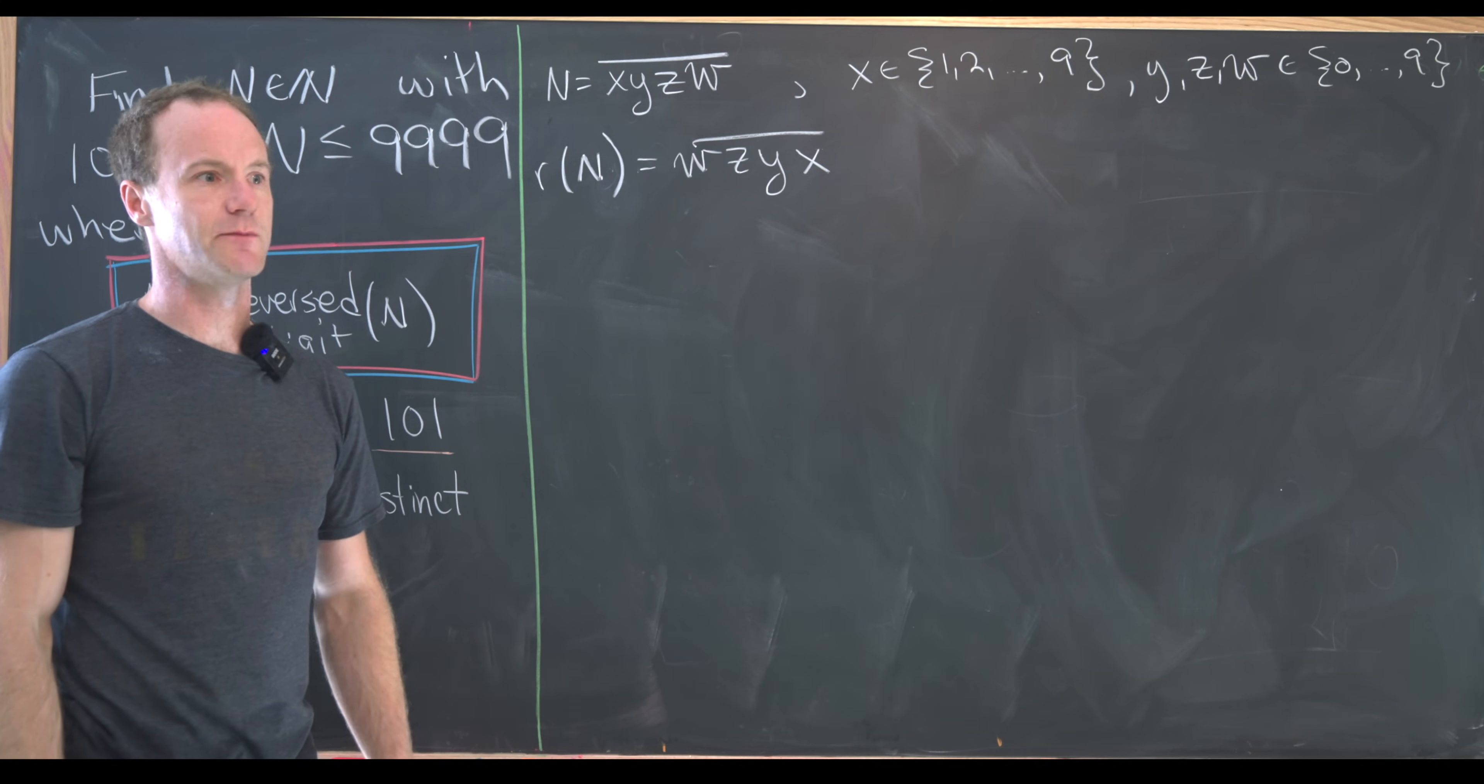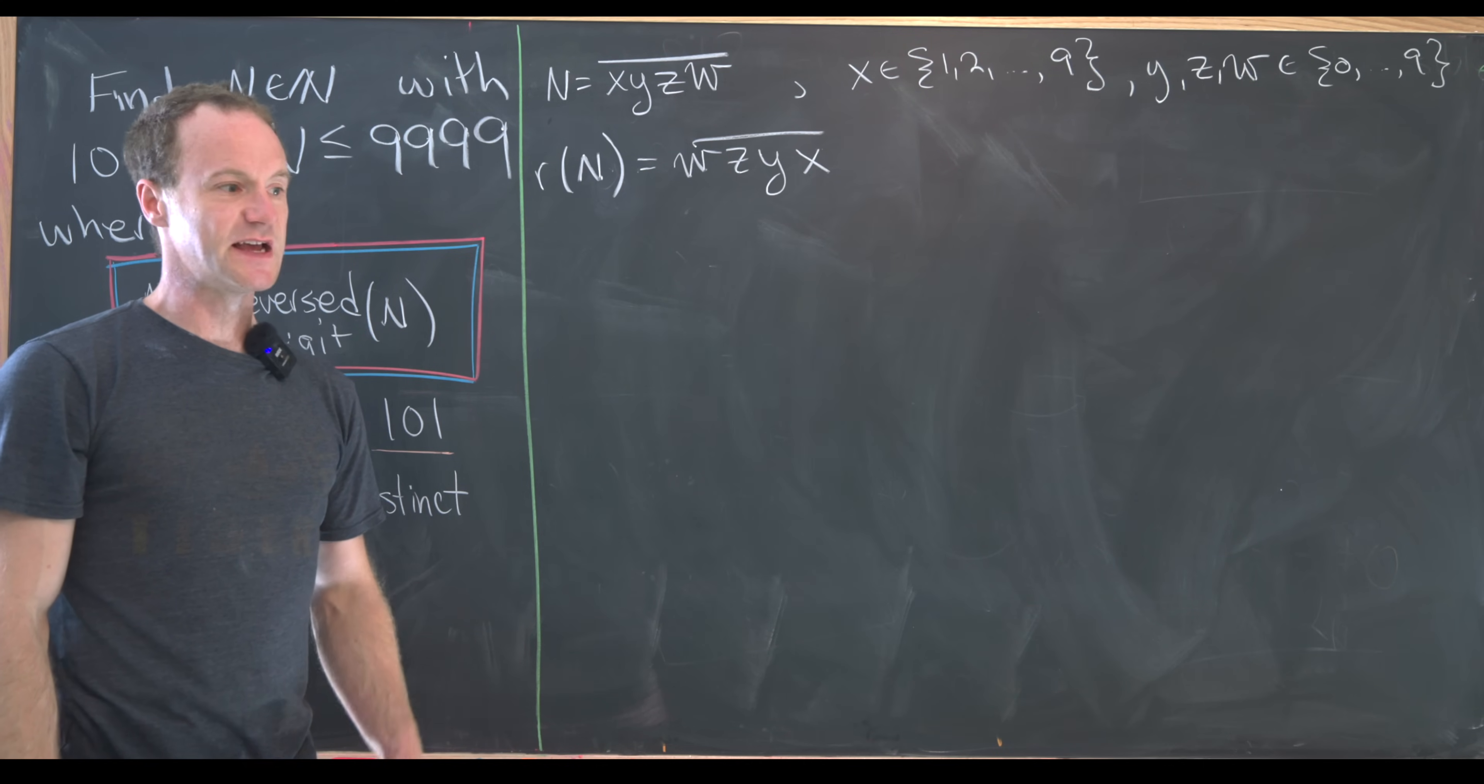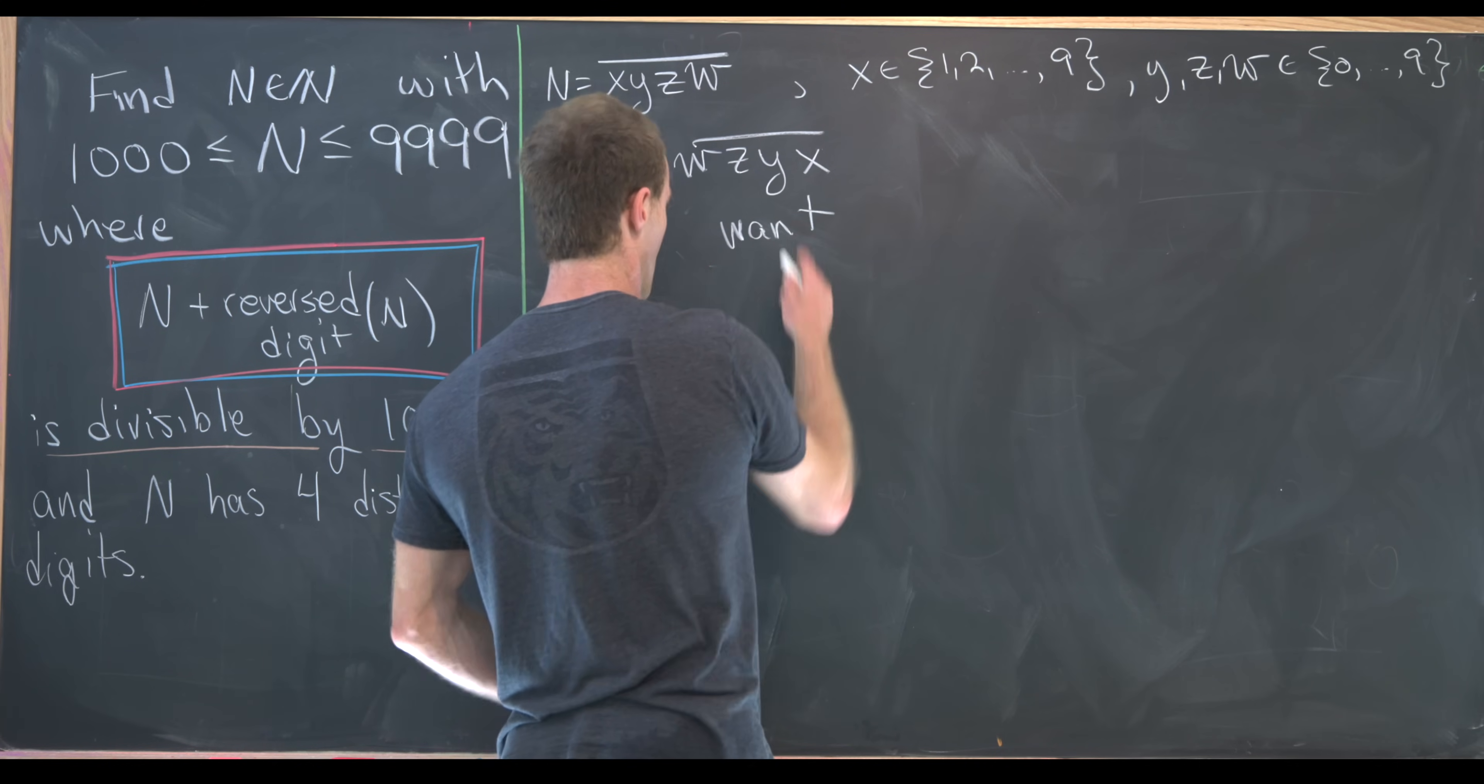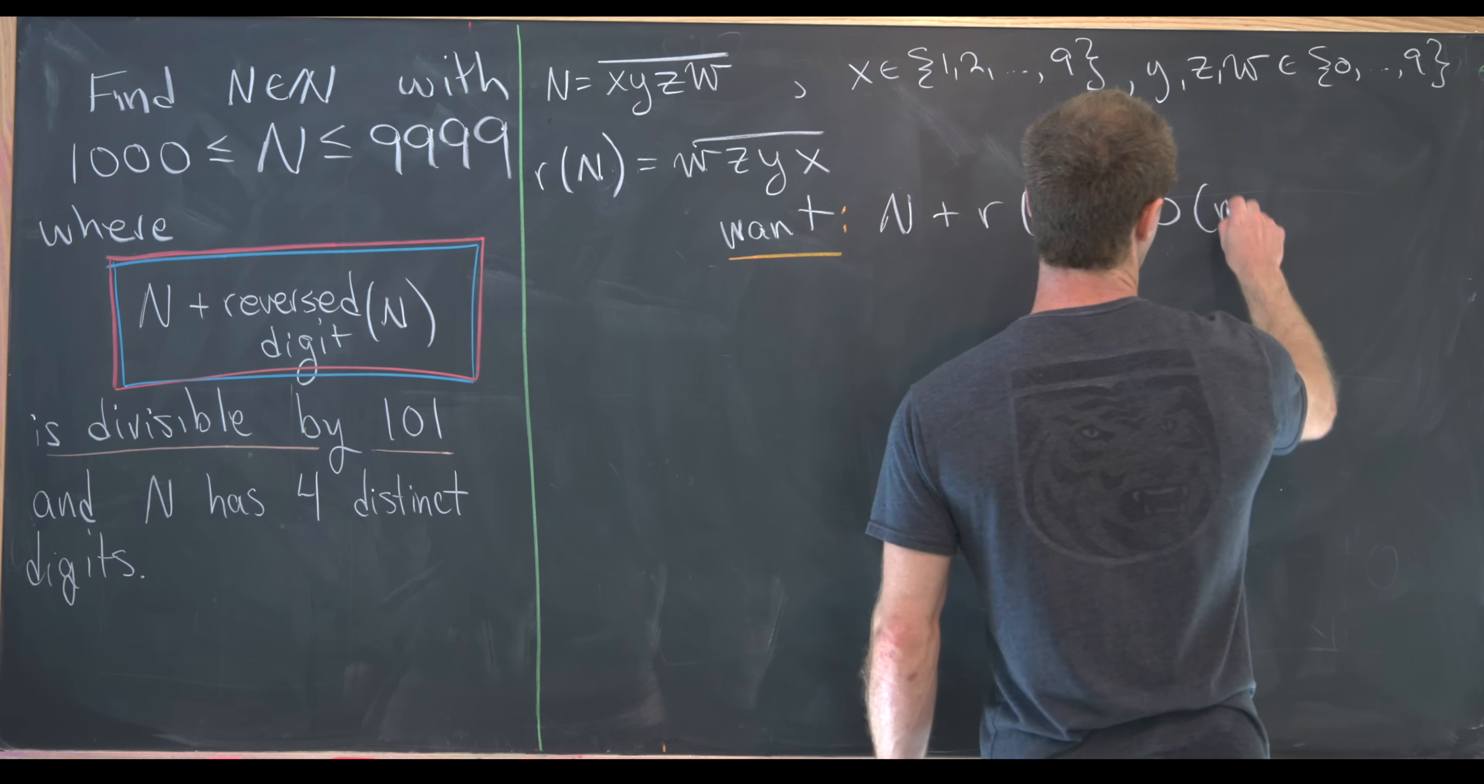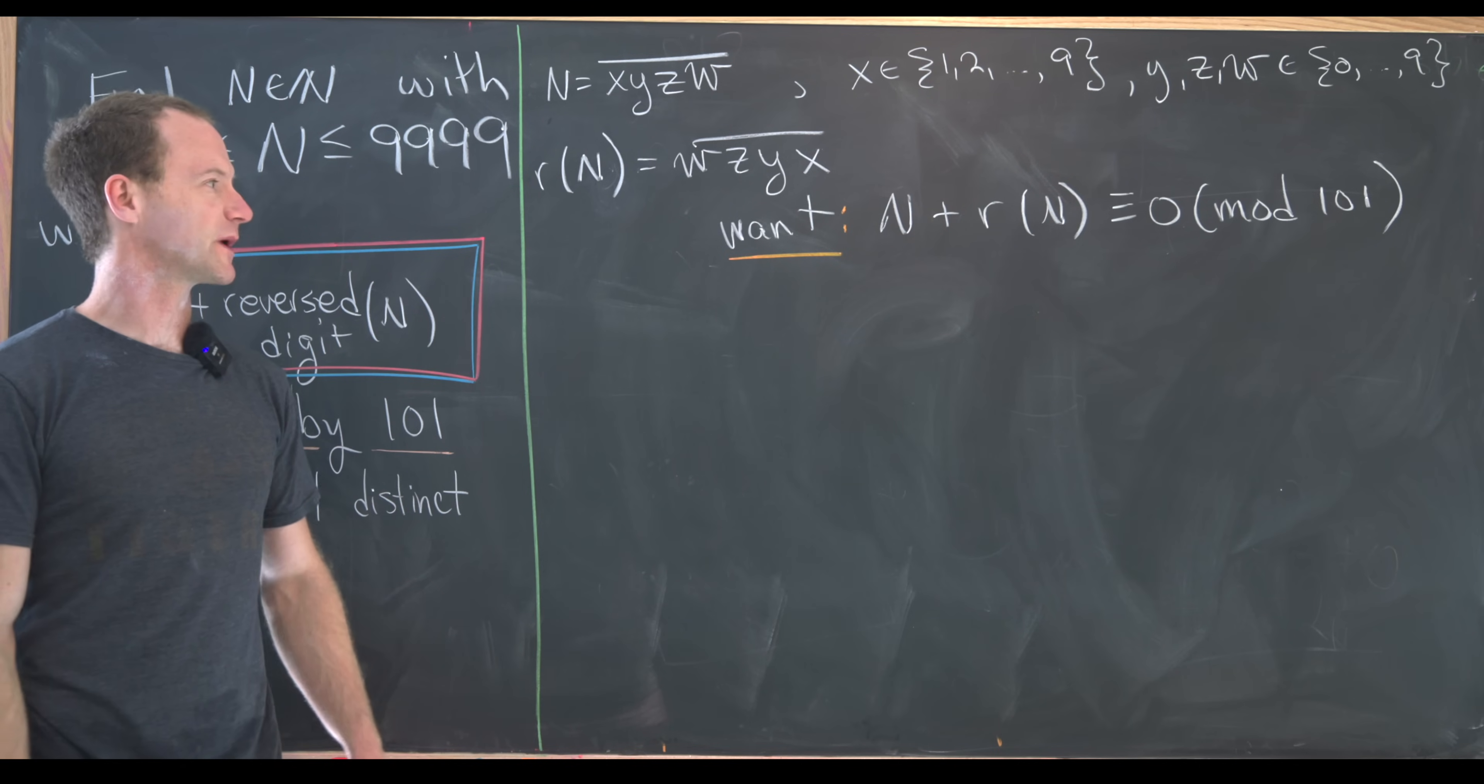But let's recall that being divisible by 101 or being a multiple of 101 is equivalent to being congruent to zero mod 101. So let's maybe go ahead and point that out. So here is what we want: N plus reverse digit of N is congruent to zero mod 101. So now let's see where we can go from there.